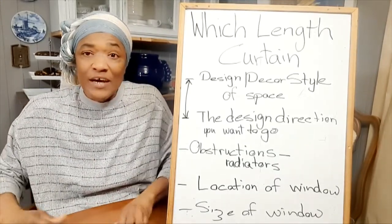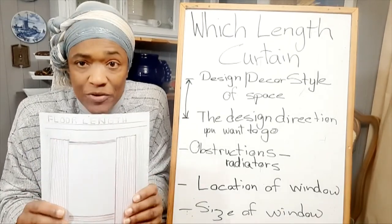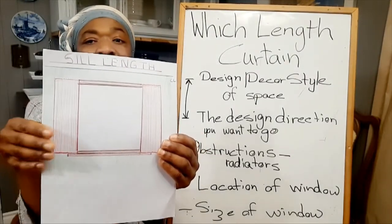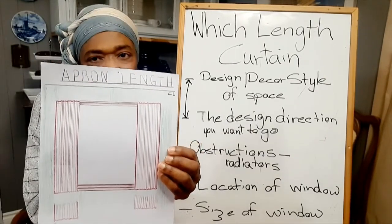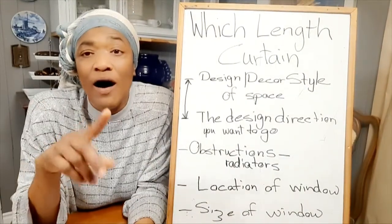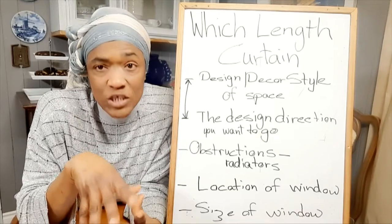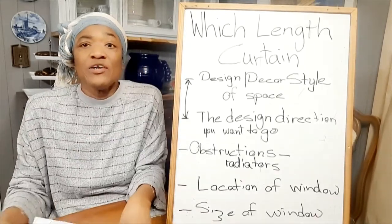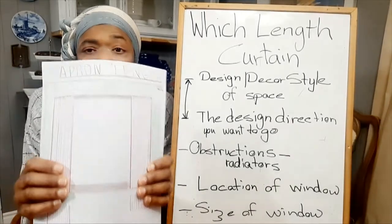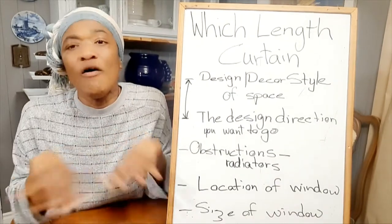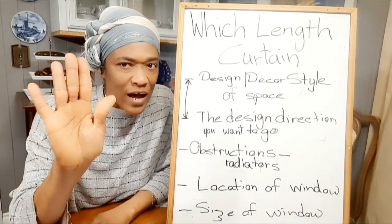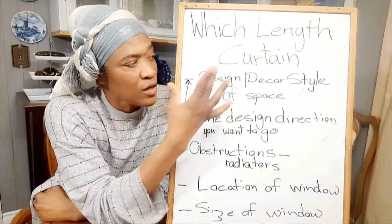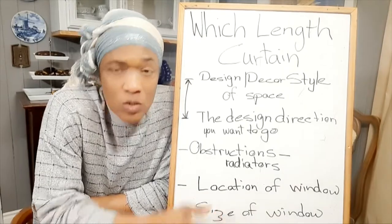The three lengths of curtains or draperies available for you to choose from are floor length, sill length, and apron length. I do have a video on the channel that goes into detail about the different lengths, so do check that out. Depending on which one you choose for your window, it can either enhance your design or take away from it. The five factors are not listed in order of importance, so let's get at it.